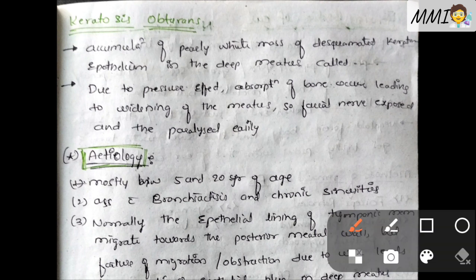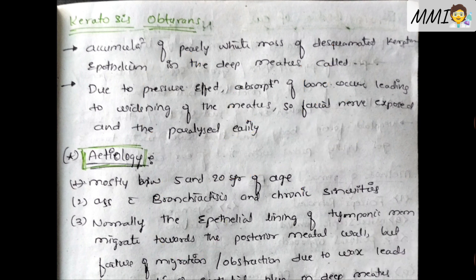What is the deep meatus? This is the ear and this is the external auditory meatus. Here is the tympanic membrane. This is the deep meatus and this is the superficial meatus. There is an accumulation of keratin mass in the deep meatus. Due to the pressure effect of keratosis obturans, absorption of the bone occurs leading to the widening of the meatus.